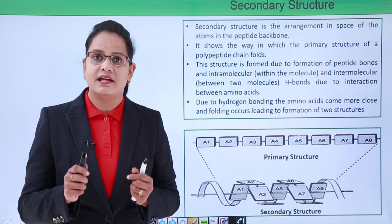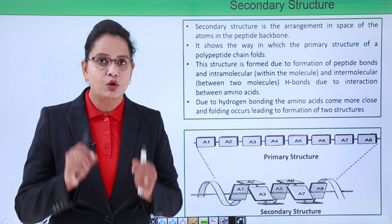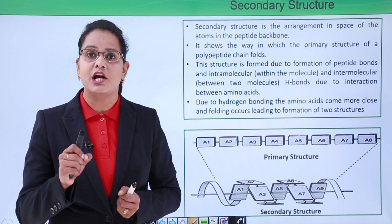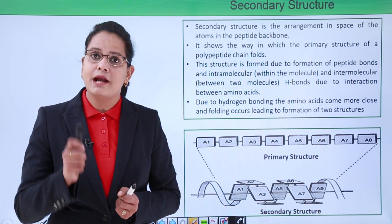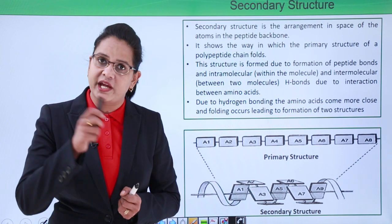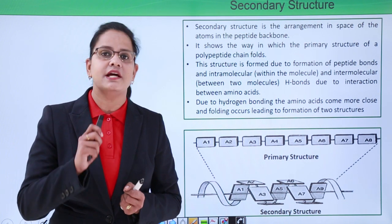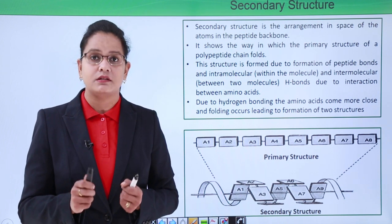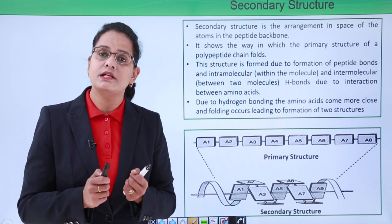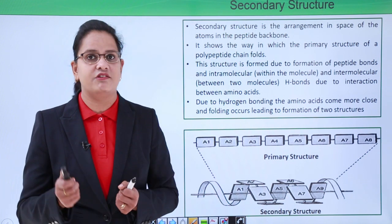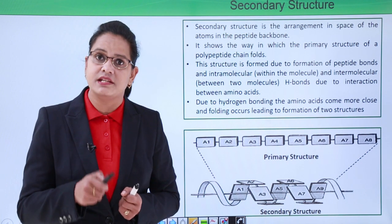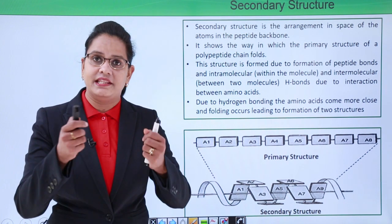We said that amino acids have a variable R chain, and because of this variable R chain there are 20 types of amino acids. All these amino acids have different natures, and because of this they interact with each other, form bonds, and these bonds result in different types of structures.